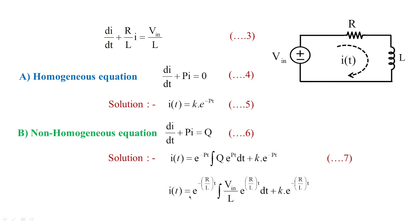Substituting p = R/L and q = V_in/L into the non-homogeneous solution gives: i(t) = e^(−R/L·t) · integral of (V_in/L)·e^(R/L·t) dt + k·e^(−R/L·t). This is the general solution for equation 3, which we treat as equation 8. This step uses the non-homogeneous differential equation approach directly.